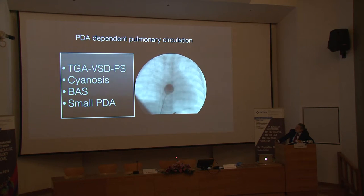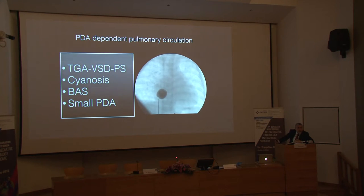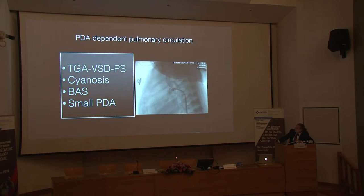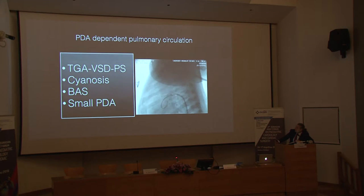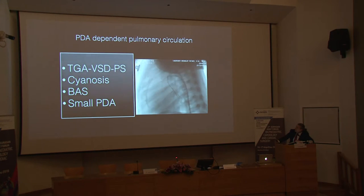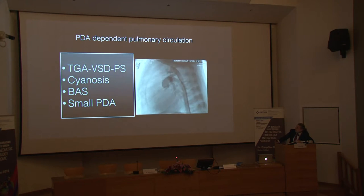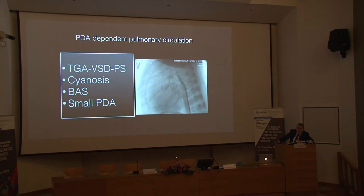In this patient with transposition and a small PDA, after balloon atrial septostomy the saturations went up slightly but were unsatisfactory. We then stented the PDA, which acted like a BT shunt. After the procedure, saturations improved to the low 80s, and the patient was very pleased. This demonstrates a role for PDA stenting even in two-ventricle patients.